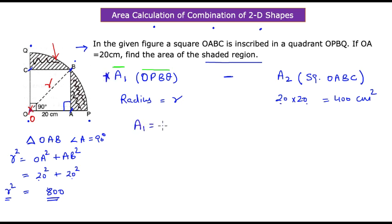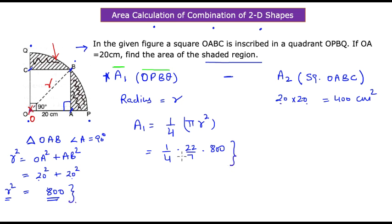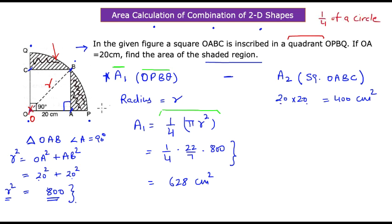Now we calculate A1. The quadrant area is one-fourth of the full circle area: A1 = (1/4) × π × r² = (1/4) × (22/7) × 800 = 628 centimeters squared. A quadrant is one-fourth of a circle with radius r, so taking one-fourth of π·r² gives exactly the quadrant area we need.